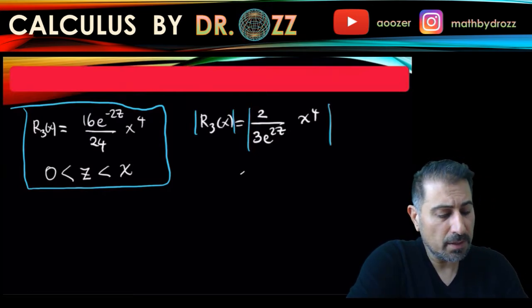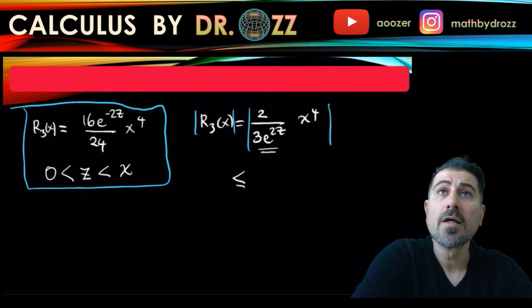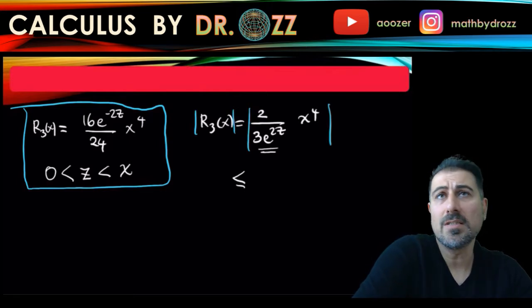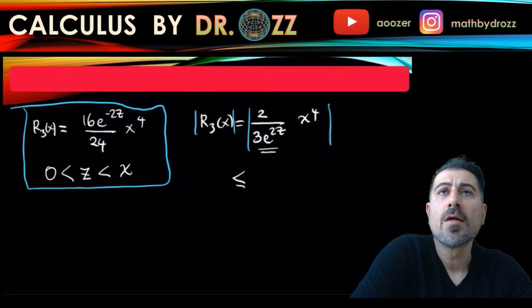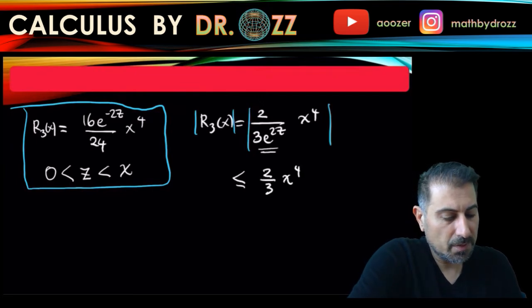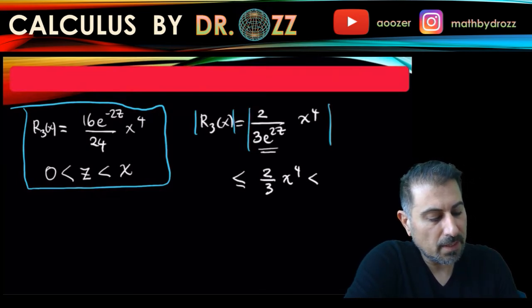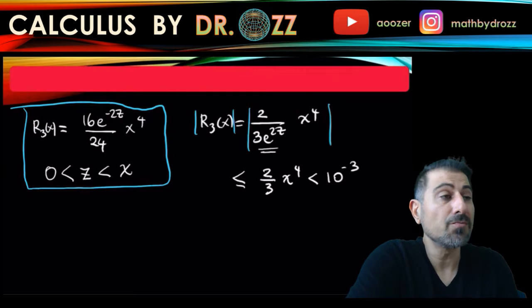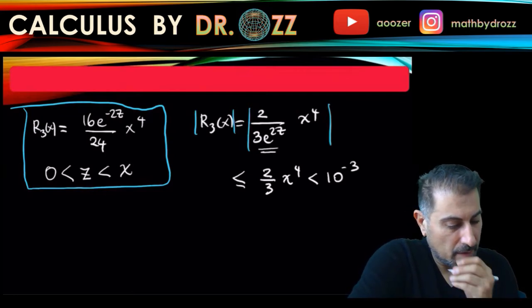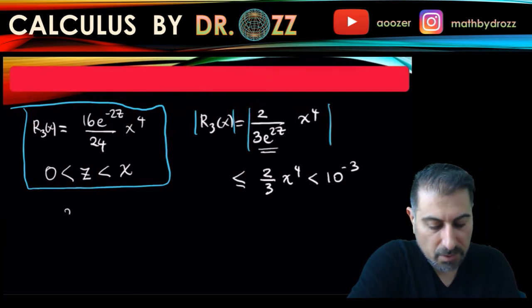So to majorize this quantity, you want to make the bottom smaller. An exponential function is a growing function, and z starts from 0 going all the way to x. To make it smaller, z must be 0. If you choose z to be 0, this quantity is going to be majorized. So this becomes 2 over 3 x to the fourth, and you want it to be less than 10 to the minus 3. So why don't we multiply both sides by, so let's just copy that down here.